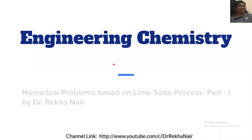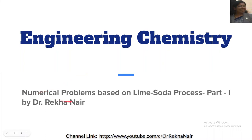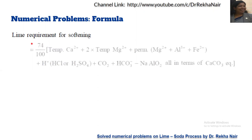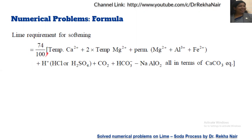Hello friends. Today we are going to learn the numerical problems based on the lime-soda process. Before going deep into the process, let us see the formula for the lime requirement and soda requirement. The lime requirement formula is: lime requirement = (74/100) × (temporary calcium + 2×temporary magnesium + permanent magnesium + aluminium + iron + H⁺ + CO₂ + HCO₃⁻ + sodium aluminate), all in terms of calcium carbonate equivalent.